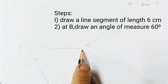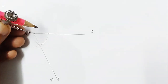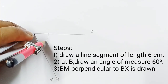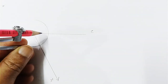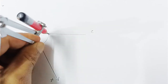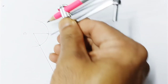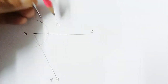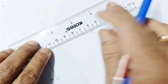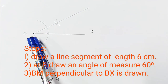First we drew a line segment of length 6 centimeters, then at B drew 60 degrees. Now I am going to draw 90 degrees on this ray BX. Taking B as center with any radius, draw an arc. With the same measurement, cut once — that gives 60 degrees — then again from that point gives 120 degrees. Bisect this to get 90 degrees. Mark and join to get the two lines perpendicular to each other.